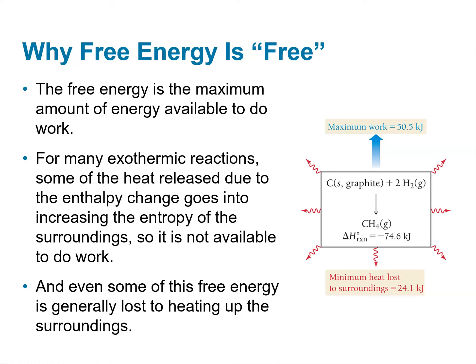Why is free energy called 'free'? Free energy is the maximum amount of energy available to do work on a system — in chemistry, most often chemical energy. For exothermic reactions, some heat released due to enthalpy change goes into increasing the entropy of the surroundings and is no longer available to do work — that energy is lost to the environment. The difference between total energy change and energy lost to surroundings is what we mean by 'free' energy.